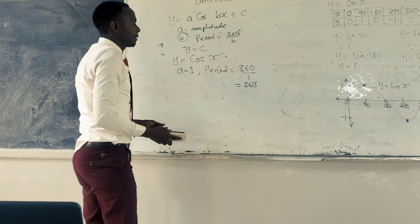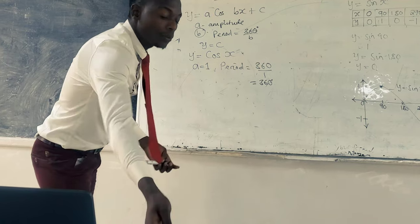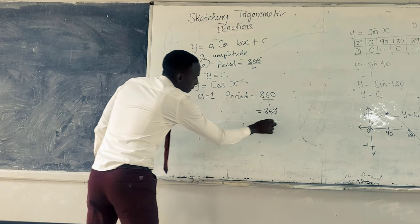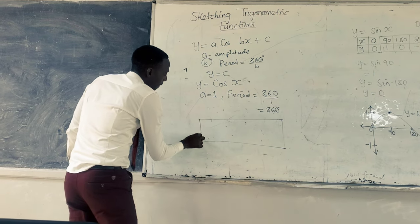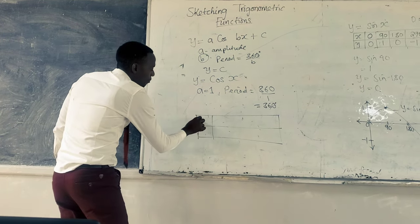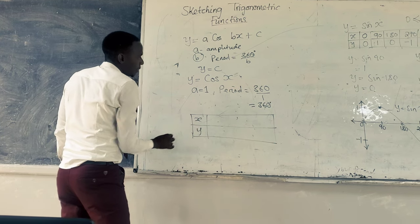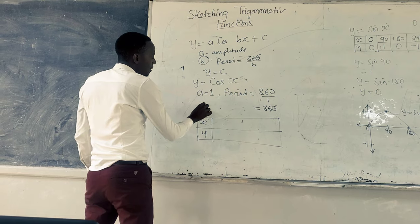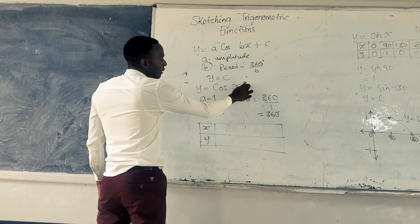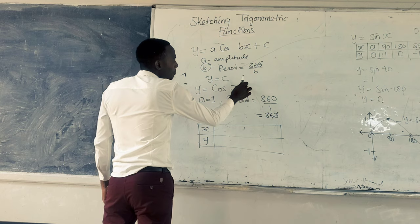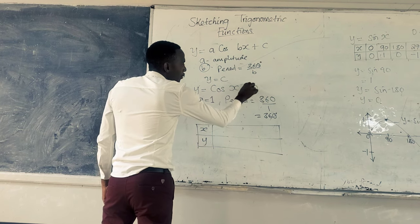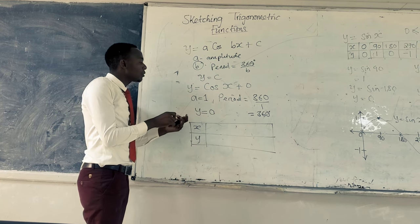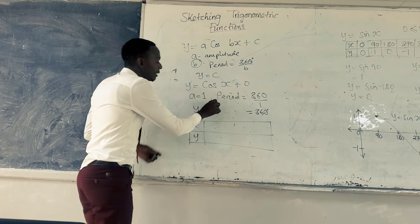Having found this, for us to sketch now, we have to come up with the table of values. So the table of values is X, Y. We are able to identify that the principal axis here, our C here, is 0. So our principal axis is Y equals 0, and the equation of the line Y equals 0 is the X axis.